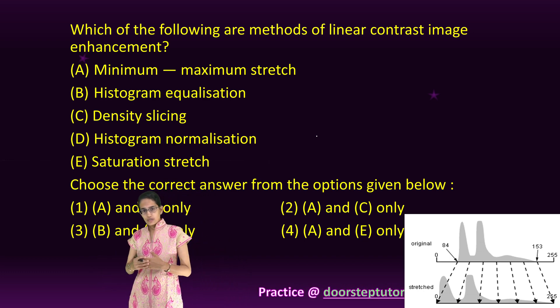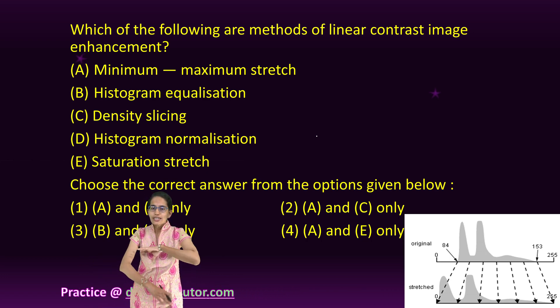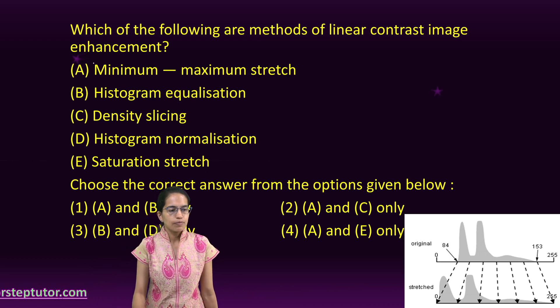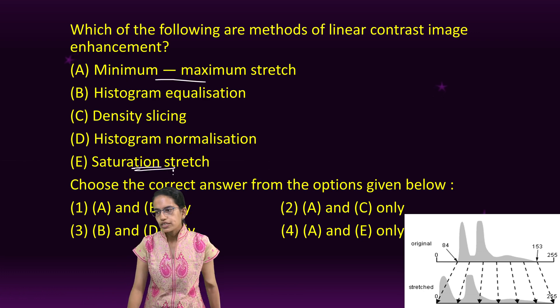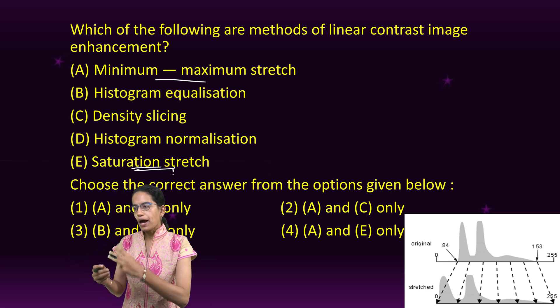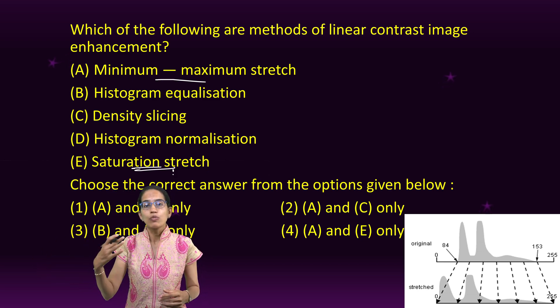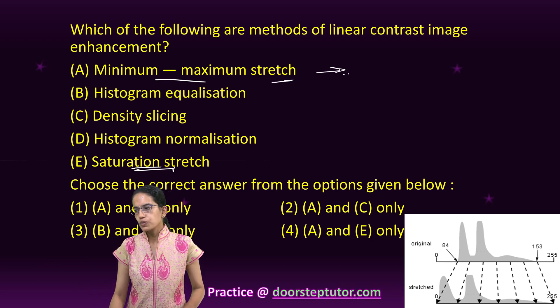This question is based on the concepts of remote sensing, where we focused on image enhancement. Under linear contrast, there are two methods: minimum-maximum and saturation stretch. The saturation stretch enhances the color of a three-band input by producing an output which has more saturated colors.